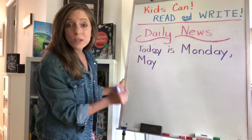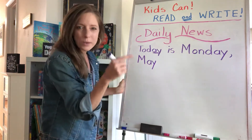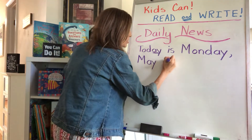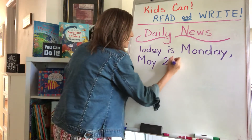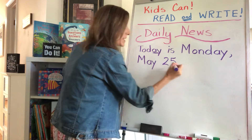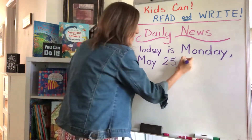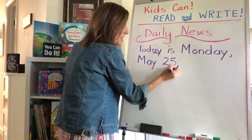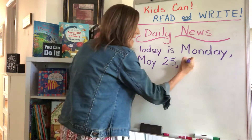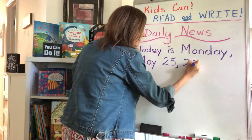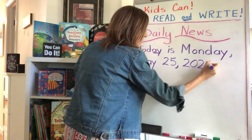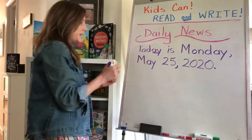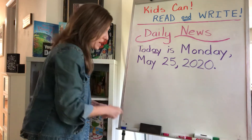Now yesterday was the 24th, so what would that make today? The 25th. And what year is it? 2020. Make sure you put that comma between your number and the year. Today is Monday, May 25th, 2020.